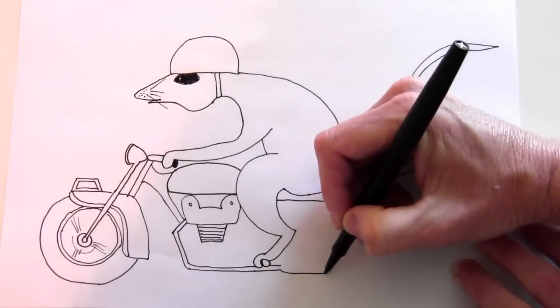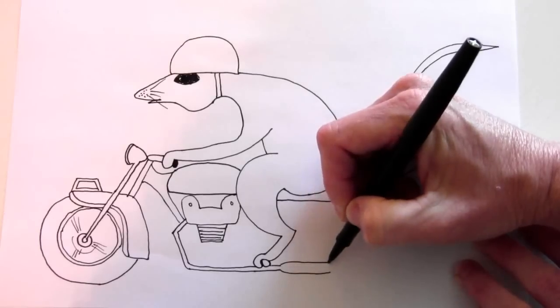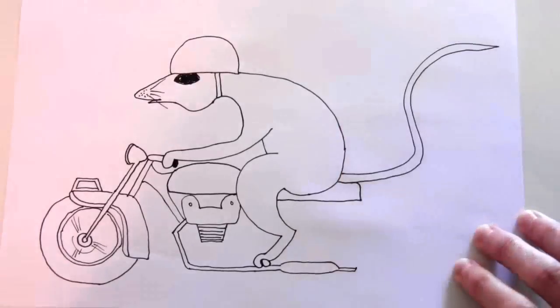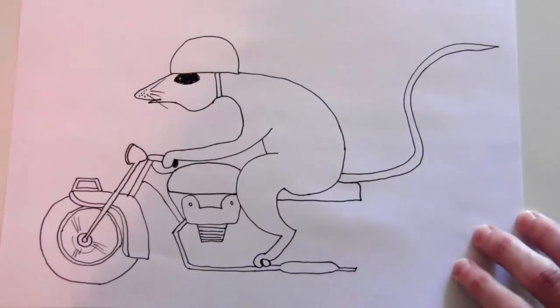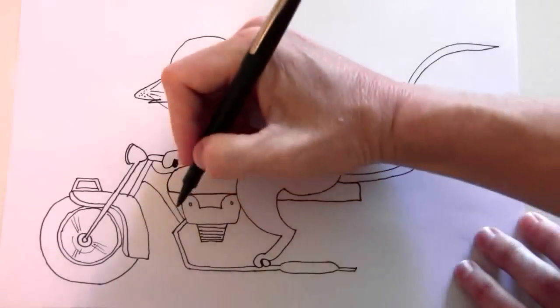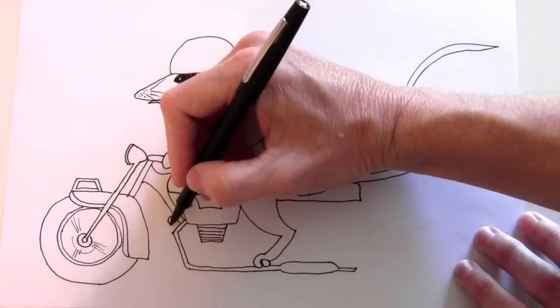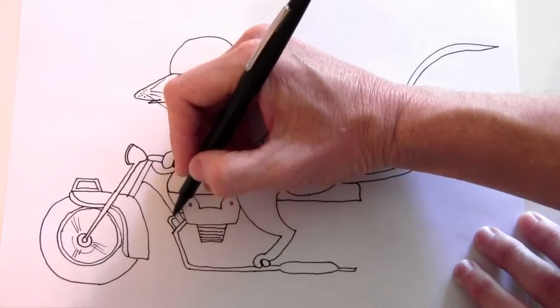And here there's sort of like a hot dog shape and then more pipe. And back here in the back there's a pipe that goes down the other side, so I just draw part of it.